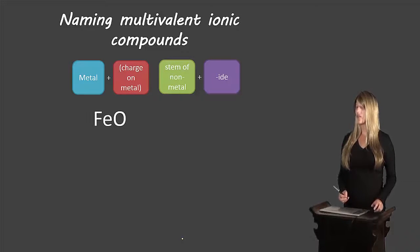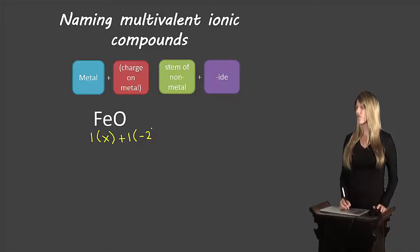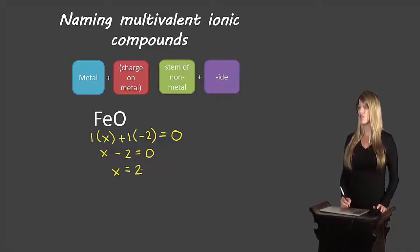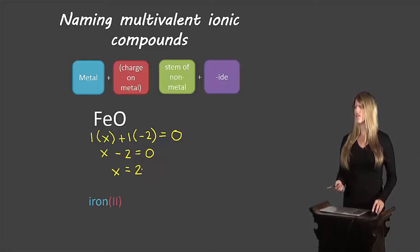Let's take a look at another example: FeO. Again using the zero sum rule to find the charge on the iron — 1 iron of unknown charge x, plus 1 oxygen with a -2 charge, must equal zero. So x + (1 × -2) = 0, meaning x - 2 = 0, and x = 2. Oxygen has the stem 'ox', add -ide — this compound is called iron(II) oxide.